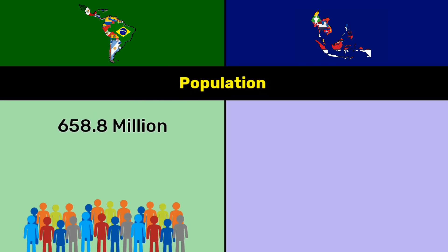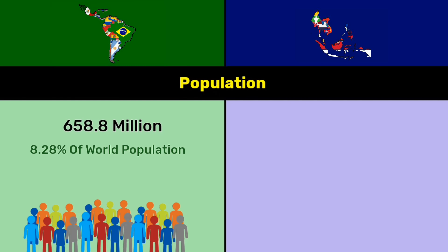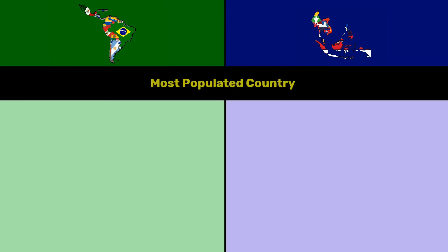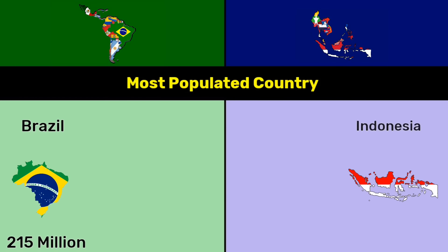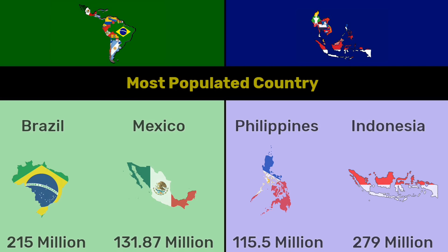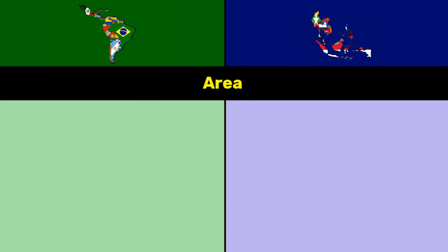Population: 658.8 million — 8.28 percentage of world population for Latin America, versus 680 million — 8.5 percentage of world population for Southeast Asia. Most populated country: Brazil 215 million and Indonesia 279 million; Mexico 131.87 million and Philippines 115.5 million.